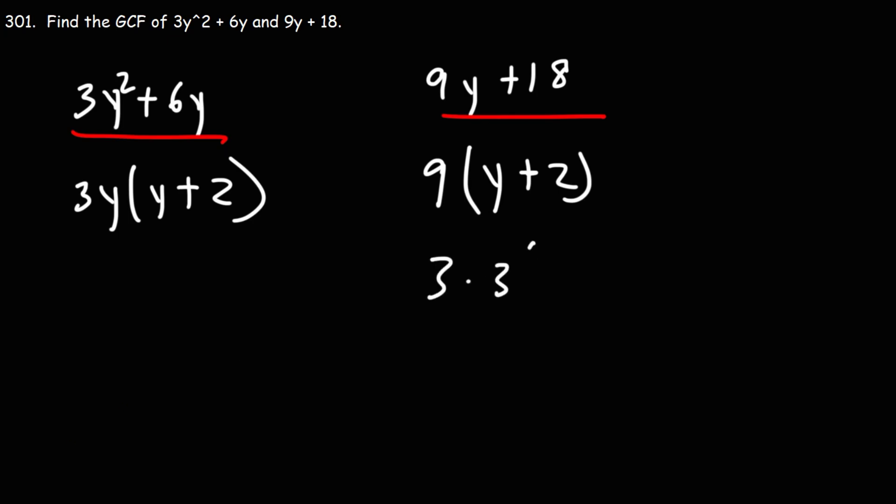9 can be broken down into 3 and 3. We need to find out what's common in both. So in both factored expressions, we could take out a y plus 2. We can also take out not two 3s, but one 3. So when we combine that, the GCF between both phrases is 3 times y plus 2 without the y.